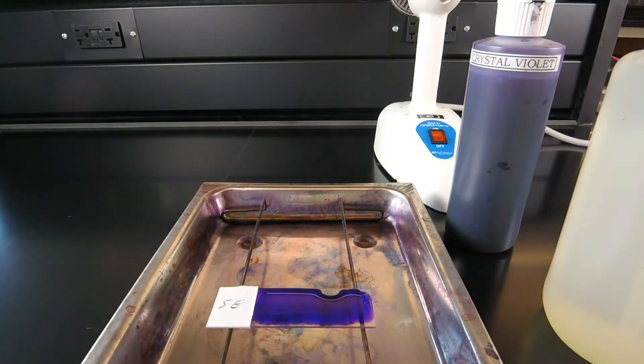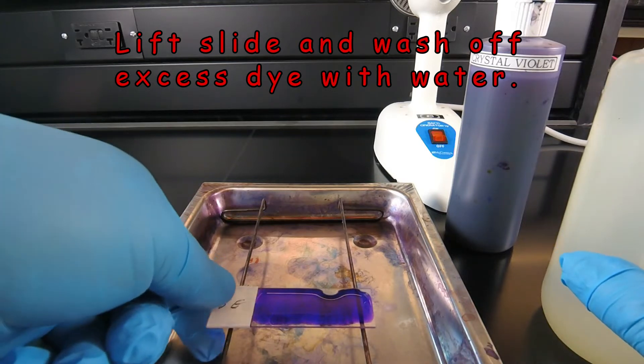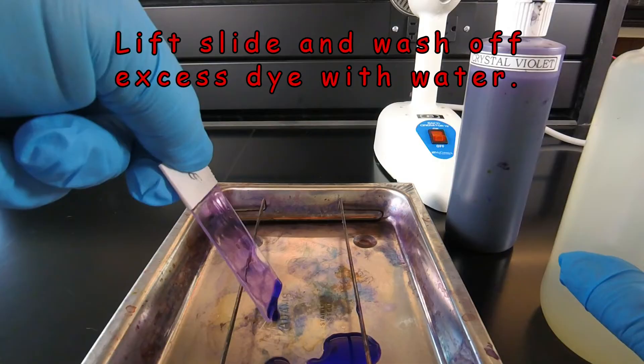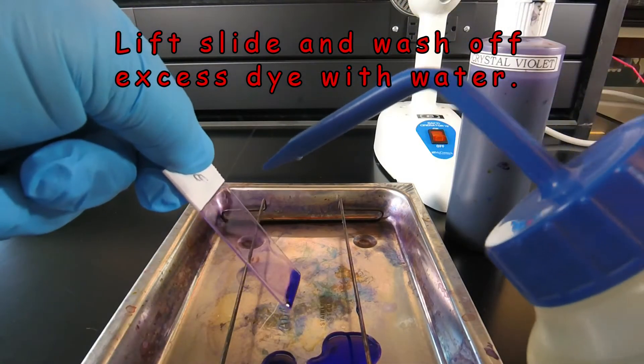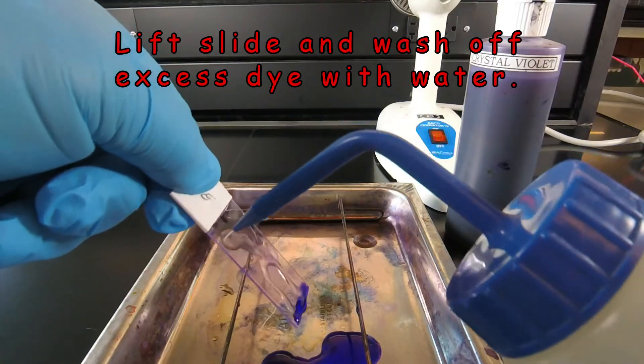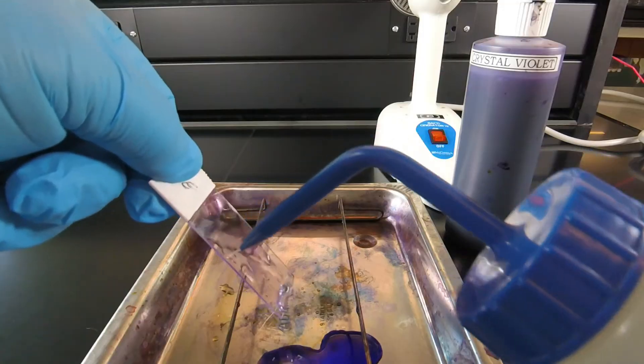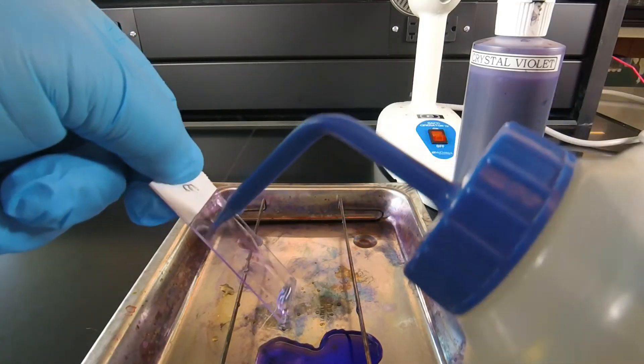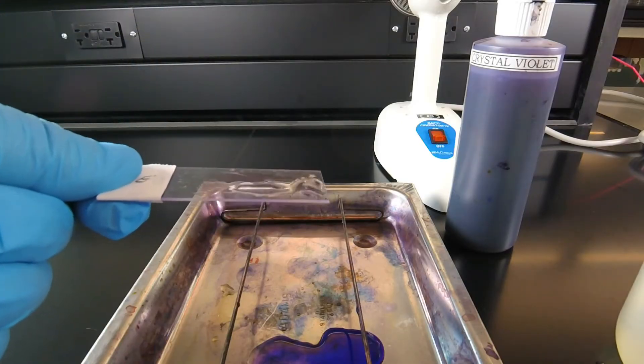Crystal violet has now been on the slide for one minute, so we're going to wash off the excess dye using deionized water. To do that, we pick the slide up by the label and hold it over the staining tray. We direct the water at the top of the smear and let it run down over the slide, watching the bottom. When it looks relatively clear coming off, we've washed off the excess dye.